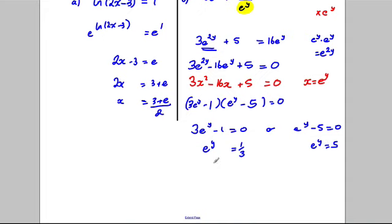You could take natural logarithms of both sides, so y is equal to ln(1/3), or y here would be equal to ln(5). You've left your answer in exact form and you're done.